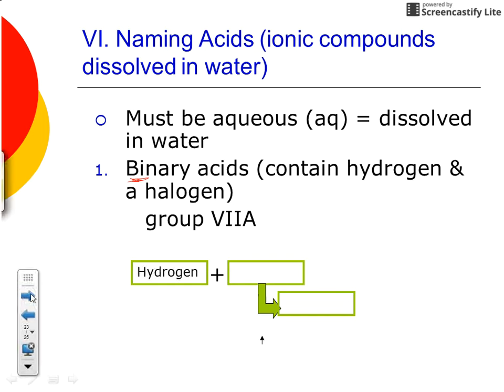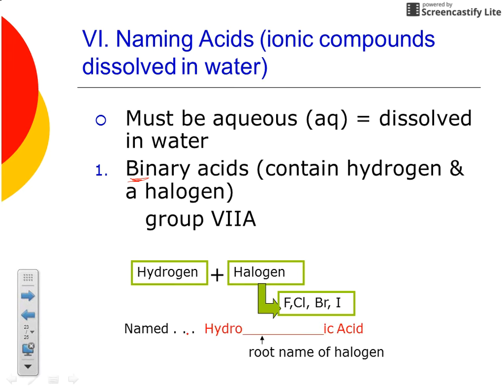So you have hydrogen plus a halogen. Those halogens, if you look down the group 7a, are fluorine, chlorine, bromine, and iodine. The format that we use to name these binary acids is: hydro blank ic acid. In this blank we will put the root name of our halogen.